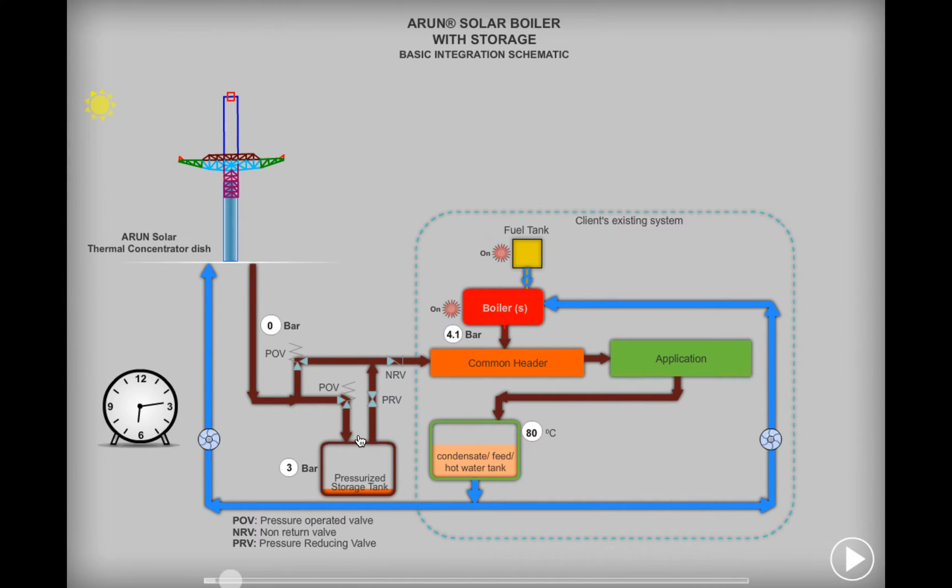The Arun solar concentrator system automatically tracks the sun from morning to evening. The solar radiation falling on the reflecting collector surface is collected at a single point at which the receiver is placed. The receiver coil at the focus of the dish transfers the heat of the sun to the heating system, which is water in this case.